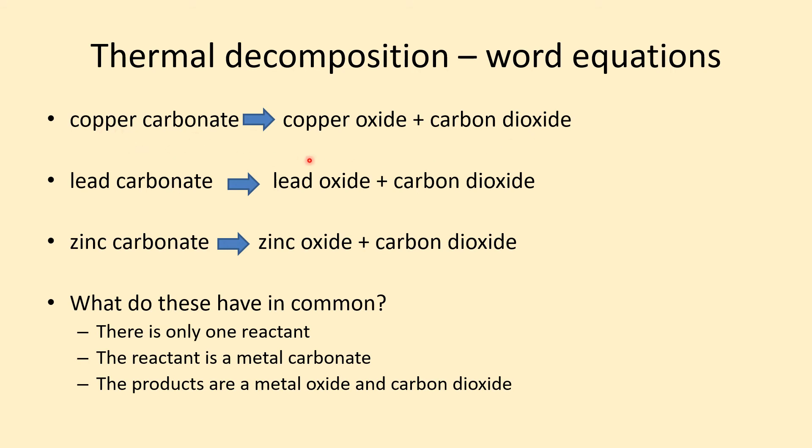The products are a metal oxide and carbon dioxide. Copper carbonate goes to make copper oxide, lead carbonate goes to make lead oxide, zinc carbonate goes to make zinc oxide. You see the pattern? They all make carbon dioxide as well.